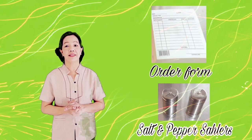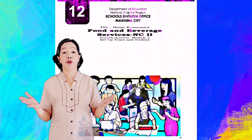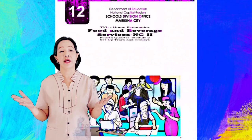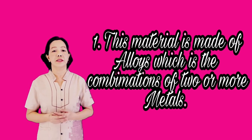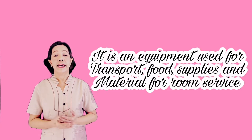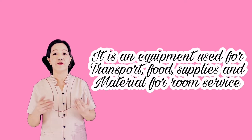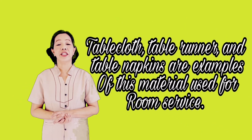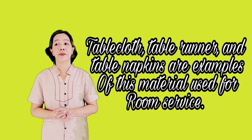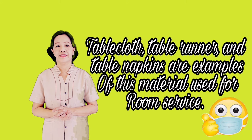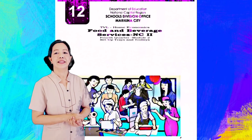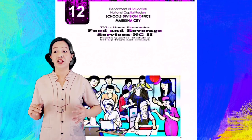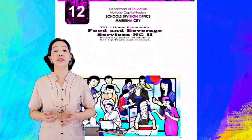Lastly, we have other materials and equipment used in setting up trays and trolleys for room service. Since you are now familiar with the materials and equipment, let me check if you really learned something today. First question: this material is made of alloys, which is the combination of two or more metals. Second question: it is equipment used for transferring food, supplies, and materials for room service. Third question: tablecloth, table runner, and table napkins are examples of this material used for room service. Here is the next set of questions — I am going to show you pictures of materials and equipment and you are going to tell me the name.